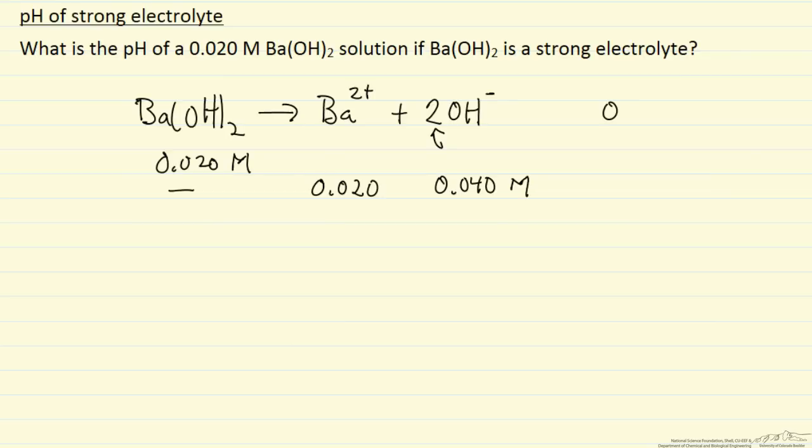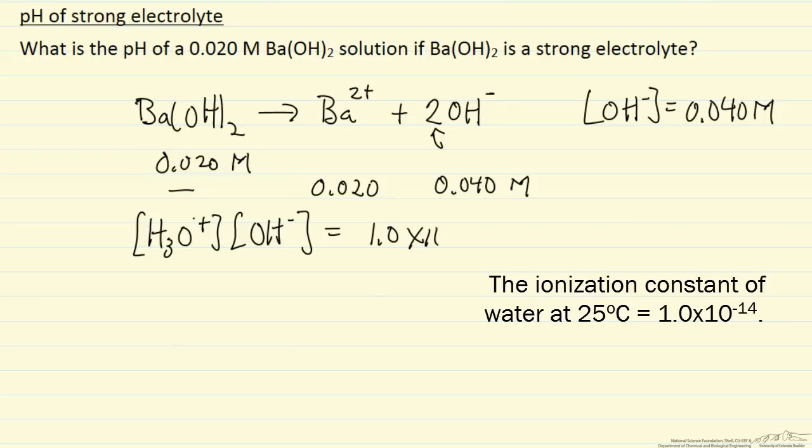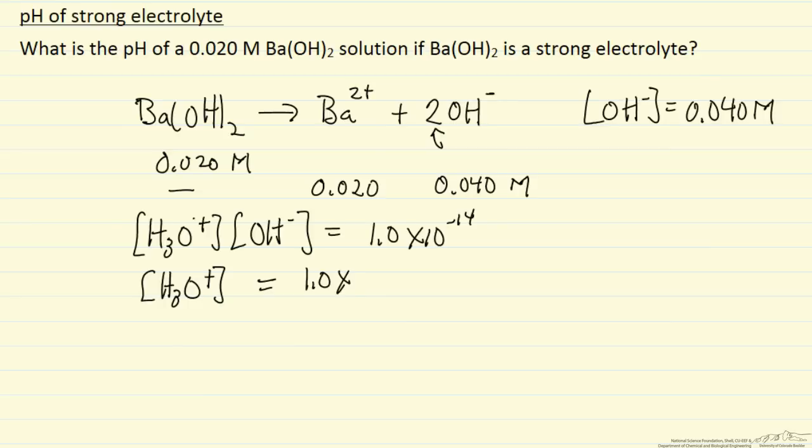And so that says our hydroxide concentration is 0.040 molar. We want the hydronium ion concentration. We know the product of these two is 1 times 10 to the minus 14. We can solve for hydronium ion concentration because it's 1 times 10 to the minus 14 over 0.040 molar.